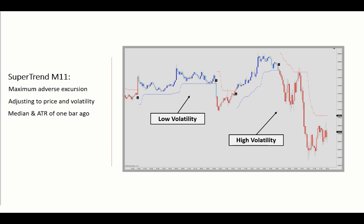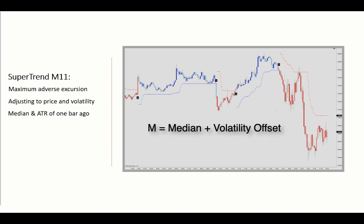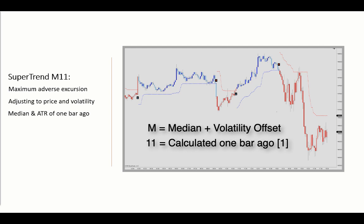The M here stands for median, whereas the double one indicates that the median and the volatility offset are each calculated one bar ago. Therefore, the Supertrend indicator does not recalculate the stop level with each incoming tick, which will optimize your CPU load.